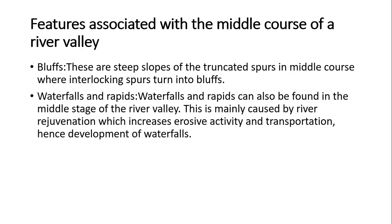The features associated with the middle course of a river valley are bluffs, waterfalls, and rapids. Bluffs are the steep slopes of truncated spurs in the middle course, whereby interlocking spurs turn into bluffs. These bluffs resulted from interlocking spurs that existed in the earlier stage. Waterfalls and rapids can also be found in the middle stage of a river valley, mainly caused by river rejuvenation, which increases erosive activity and transportation, leading to the development of waterfalls.